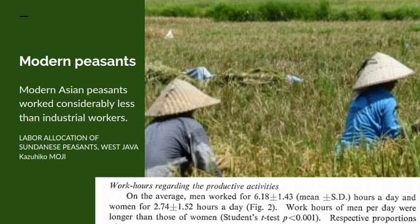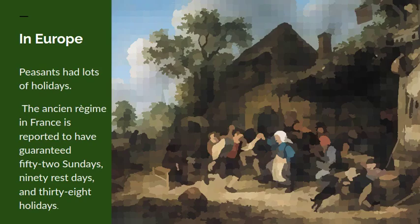That's comparatively modern peasants in a rice agricultural system. What about Europe? One of the striking things is that peasant agriculture in Europe was carried out under conditions where there were lots of holidays. The Ancien Régime in France reportedly guaranteed 52 Sundays off, 90 rest days and 38 holidays, so the number of days actually working was comparatively small by modern standards.